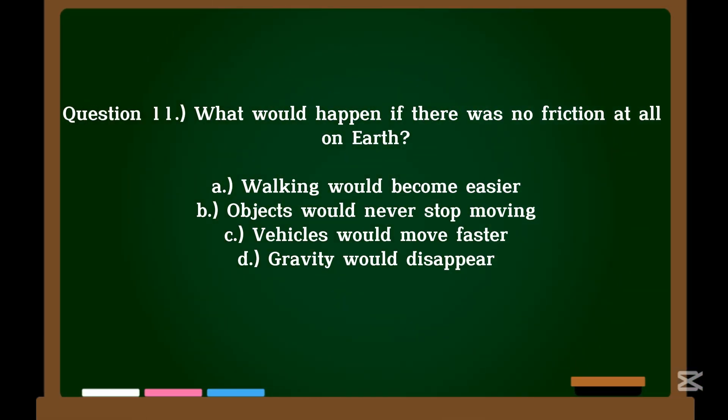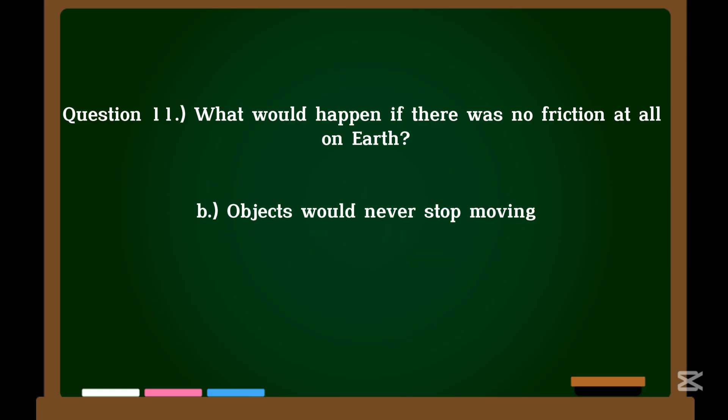Question 11. What would happen if there was no friction at all on Earth? A. Walking would become easier. B. Objects would never stop moving. C. Vehicles would move faster. D. Gravity would disappear. Correct answer: B. Objects would never stop moving.